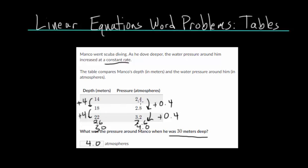And then what are we jumping by for our dependent variable? Usually our y value, but in this case, the pressure. And in this case, every time we jump by 4 meters in depth, we go 4 meters deeper, our pressure increases by 0.4 atmospheres. So make sure to do this analysis. This usually helps when dealing with these word problems with tables.